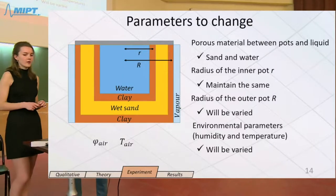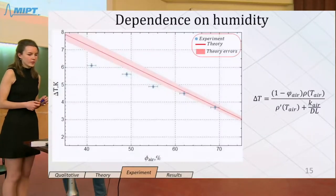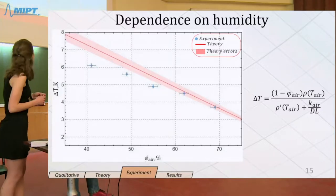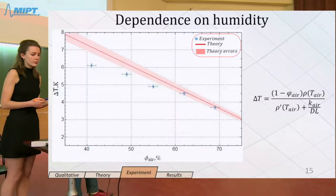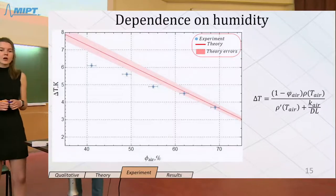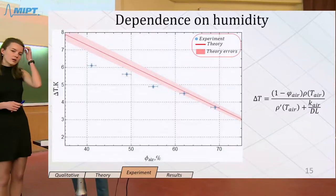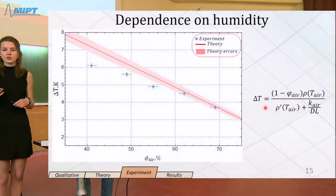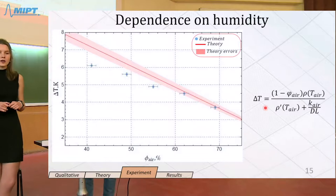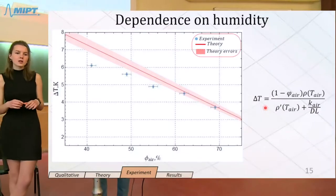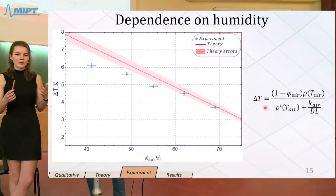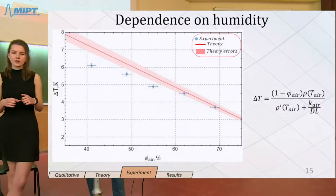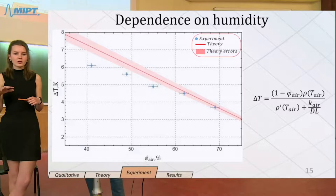The first graph we got is a dependence of temperature difference on humidity. As you can see, the less air humidity is, the bigger temperature difference we can achieve. And it's also noticeable that our theory gives better convergence in the fields of smaller temperature differences.